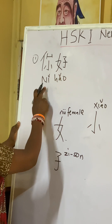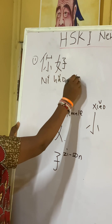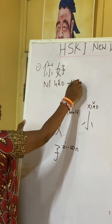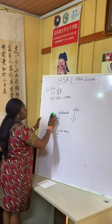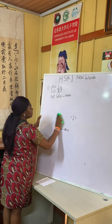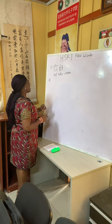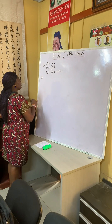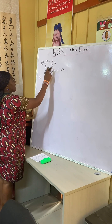So 你好 (nǐ hǎo) — 你 (nǐ) means you in singular, and 好 (hǎo) means good. Together that is hello in English. The second word today is 你们好 (nǐmen hǎo).